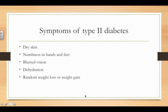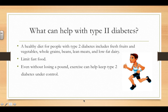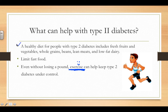Symptoms of type 2 diabetes include dry skin, numbness in hands and feet, blurred vision, dehydration, and random weight loss or gain. Exercising actually helps a lot — it gets cells to want to take in glucose again with the help of insulin, whereas before they were resistant. Eating healthy is also key: fresh fruits, vegetables, whole grains, and really making sure you're living a healthy lifestyle.